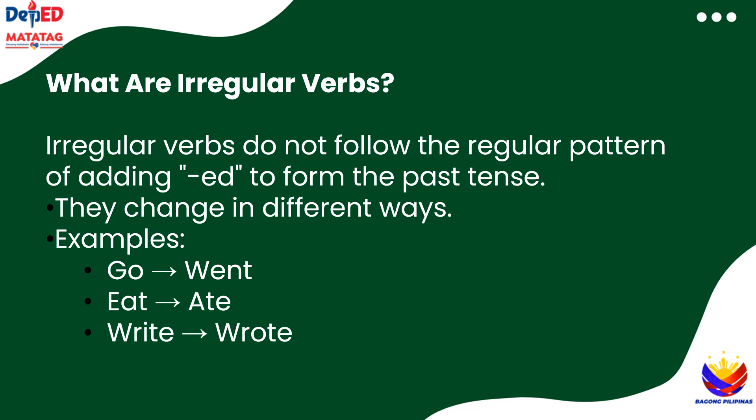Irregular verbs are a bit different. They don't follow the same pattern as regular verbs. Instead of adding -ed, they change in different ways when we talk about the past. For example, the verb go changes to went, eat changes to ate, and write changes to wrote. Each irregular verb has its own unique way of changing, which is why they can be trickier to remember.